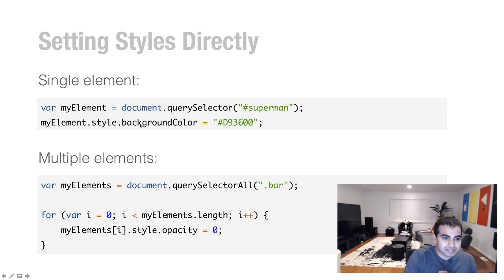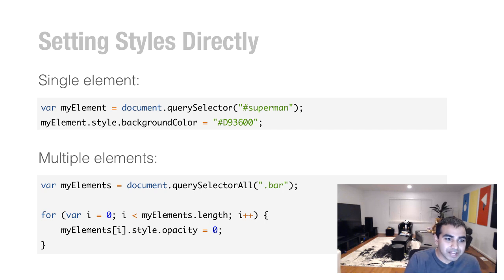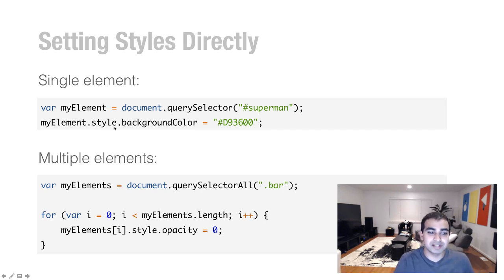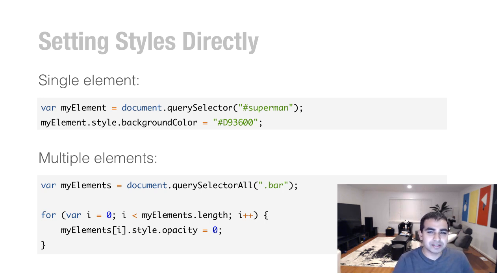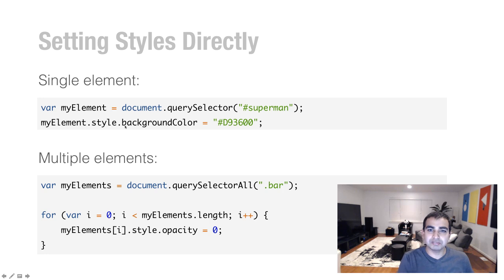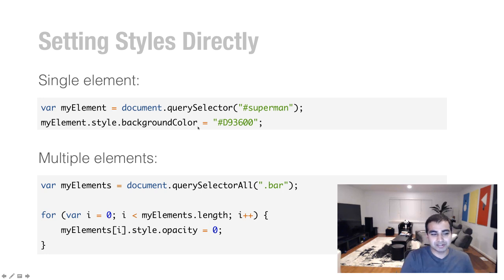Every CSS property you want to use will have a JavaScript representation that you can tack onto the style object. The way it works is this: for properties that have two words like background-color, you camelCase it. The first word is lowercase, you remove the dash, and the second, third, or fourth words are all capitalized. And that's how the backgroundColor property looks in JavaScript.